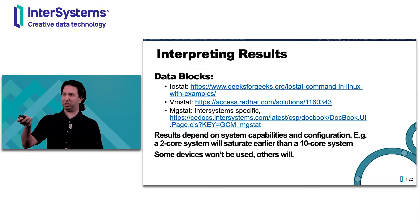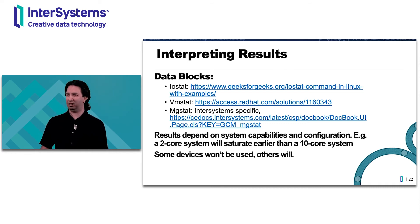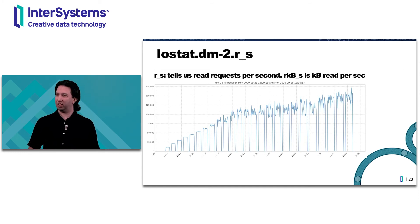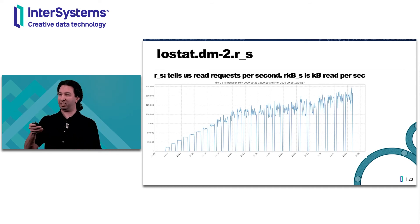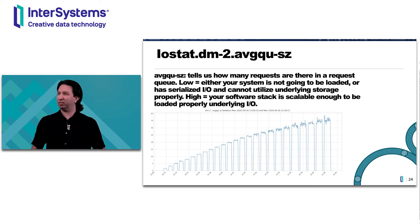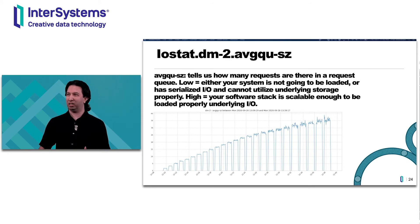The results will depend on system capabilities and configuration — there's no good or bad, this is just an idea of what you'll see. From IOSTAT, you can see reads per second and RKB per second (kilobytes read per second), which look very similar to each other. Each peak corresponds to one run — two threads, four threads, six threads, eight threads, and so on. The system does not start to saturate until well after eight threads. The queue size shows how many requests are in the queue, and you want to see that grow — it means you're running the system flat out and it's scalable under high IO.